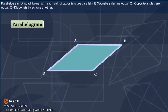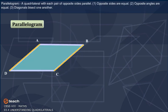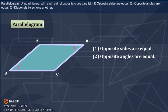Parallelogram: A quadrilateral with each pair of opposite sides parallel. Opposite sides are equal. Opposite angles are equal. Diagonals bisect one another.